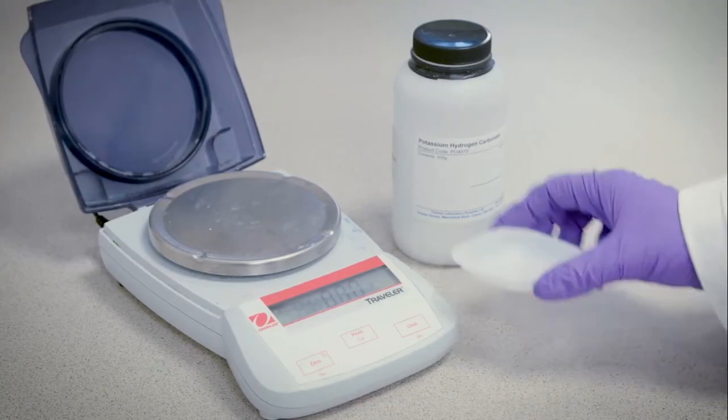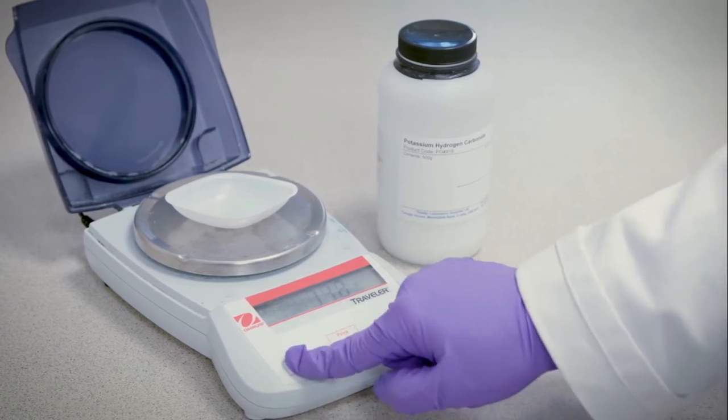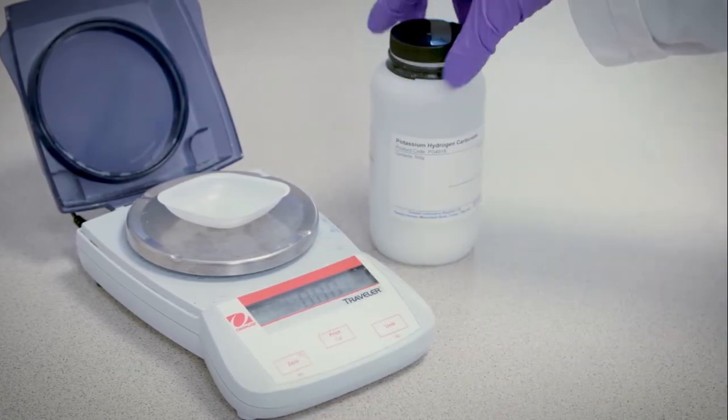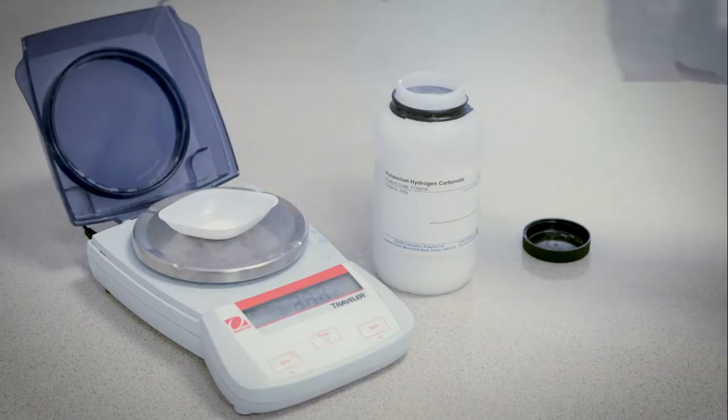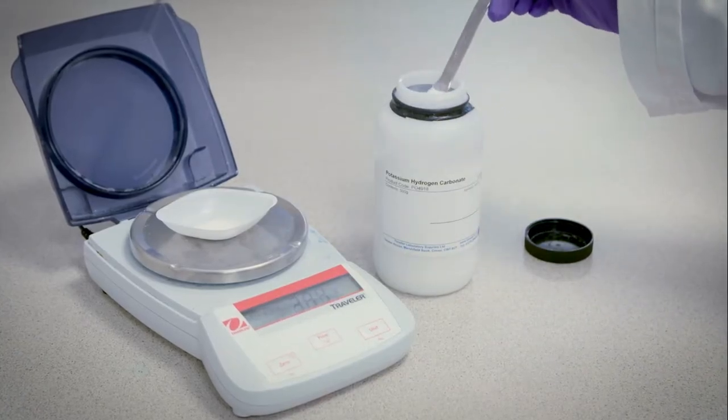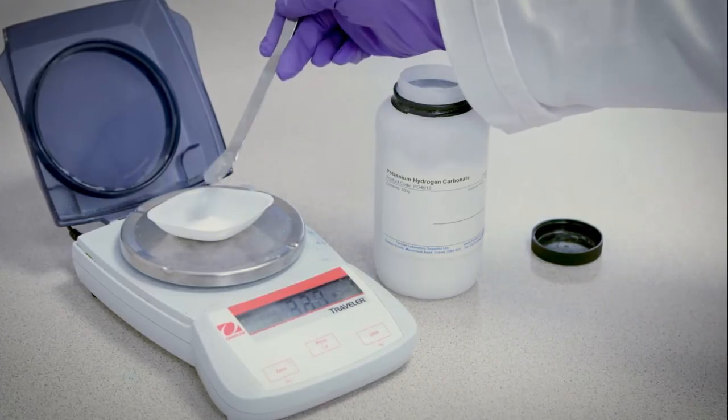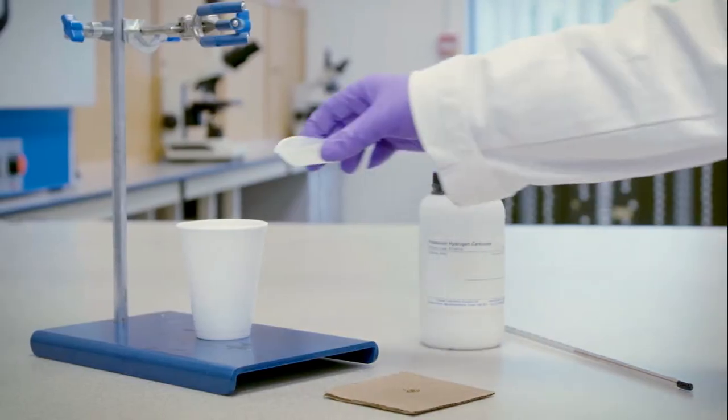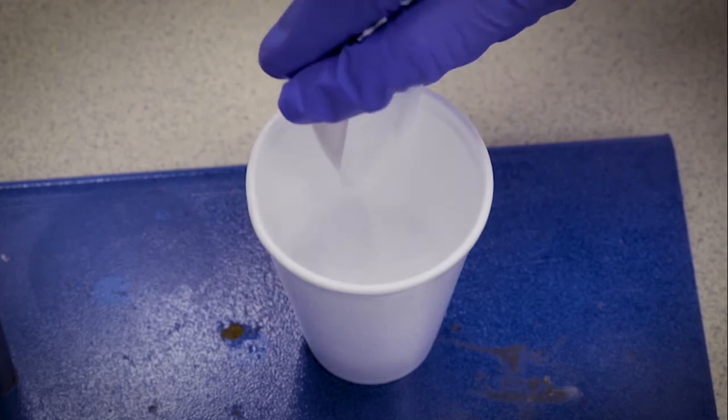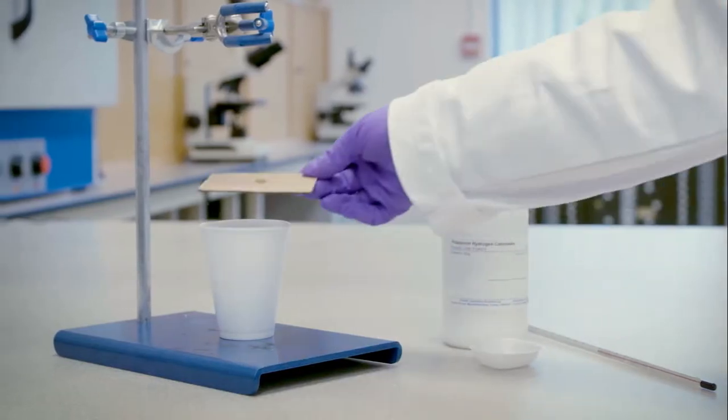Potassium hydrogen carbonate is accurately weighed out and should be between 3.25 and 3.75 grams. The accurate mass is recorded. The solid mass is added carefully to the calorimeter, producing lots of effervescence. The lid is placed loosely on top.